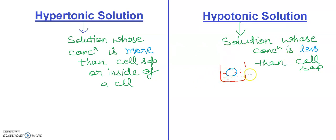Now you can see — this is the cell, and this is a solution where the concentration of the outside solution is less, and the concentration of the cell sap, which is the content inside the cell, is more.